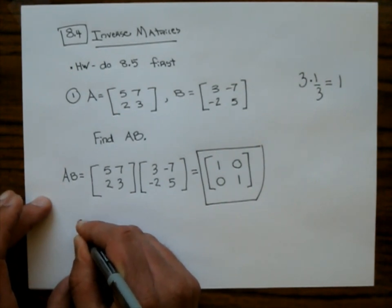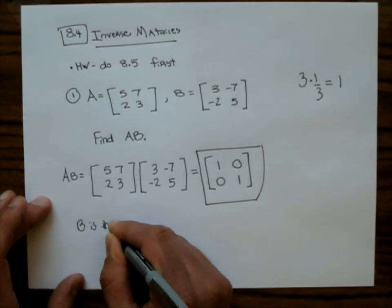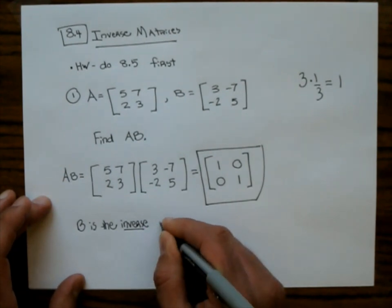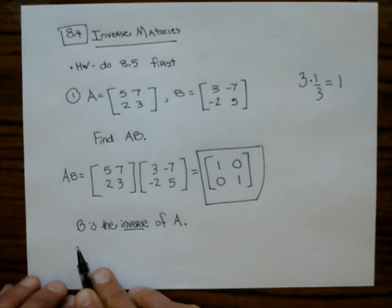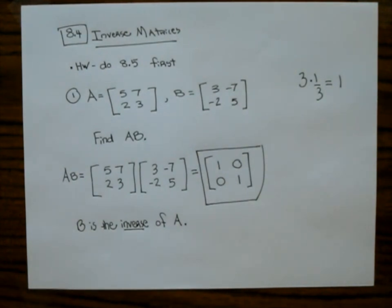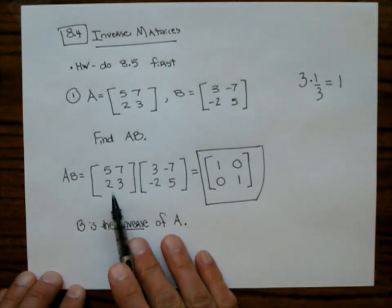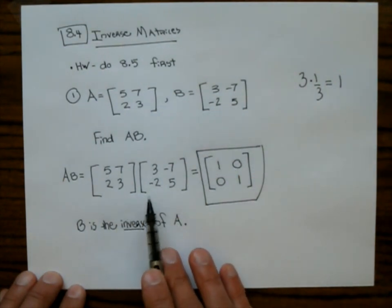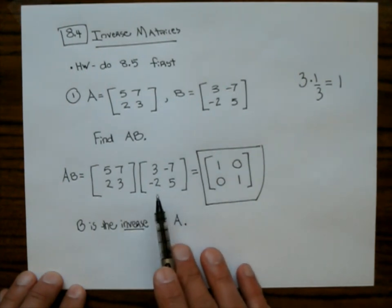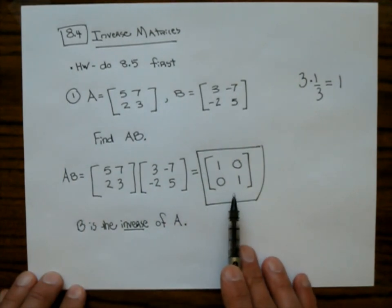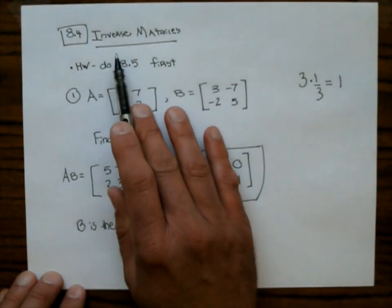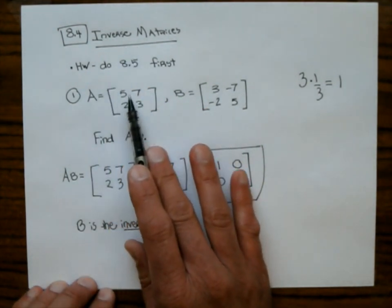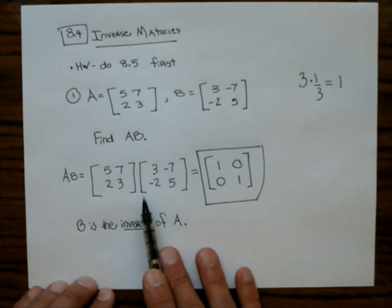We can say that B is the inverse of A, and A is the inverse of B. These are called inverse matrices. In section 8.4, they'll give you a matrix and ask you to find its inverse. One property: if you multiply them the other way — B times A — it also gives you the identity. Inverse matrices are commutative, and they only work for square matrices, where the number of rows equals the number of columns.